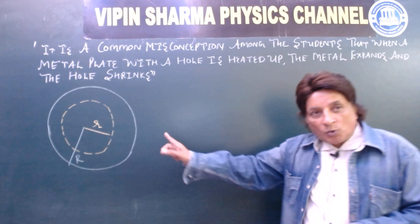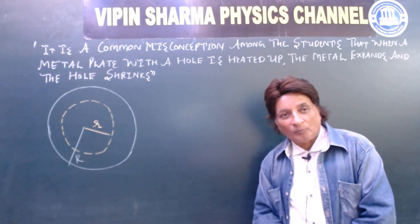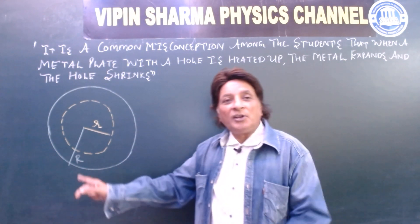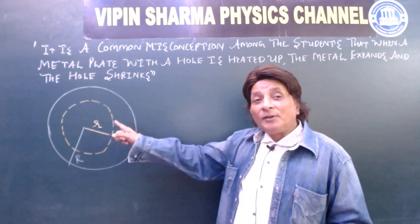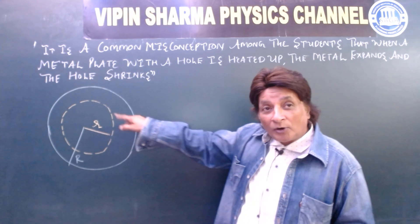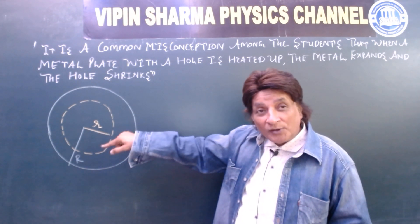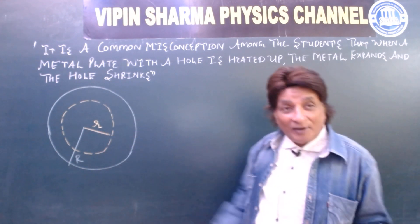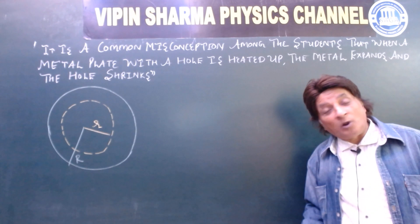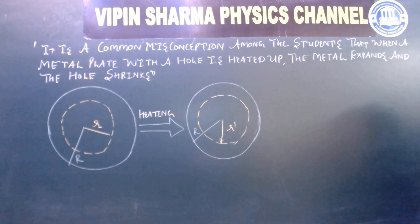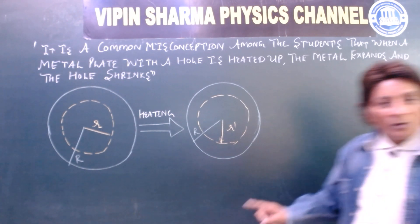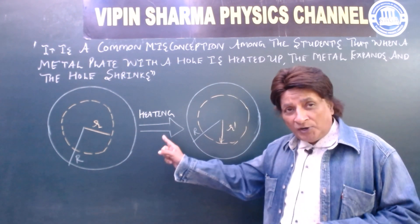So this is a metal whose radius is capital R. And there is a hole, the dotted yellow is hole, having a radius small r. And we are going to heat it up. Now see students, heating is done.